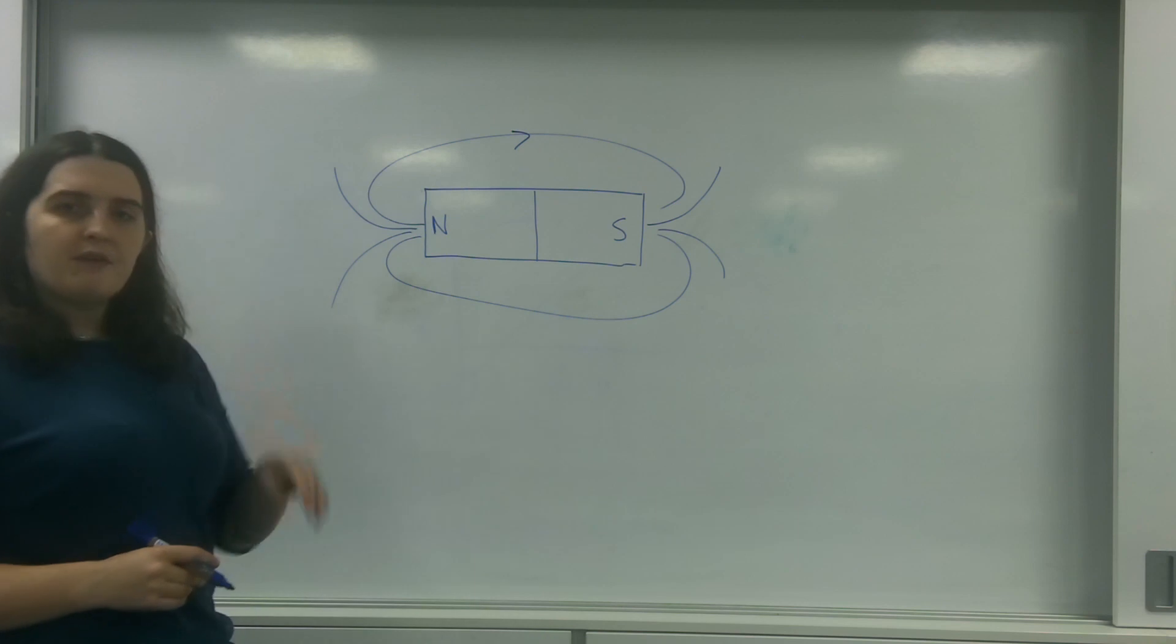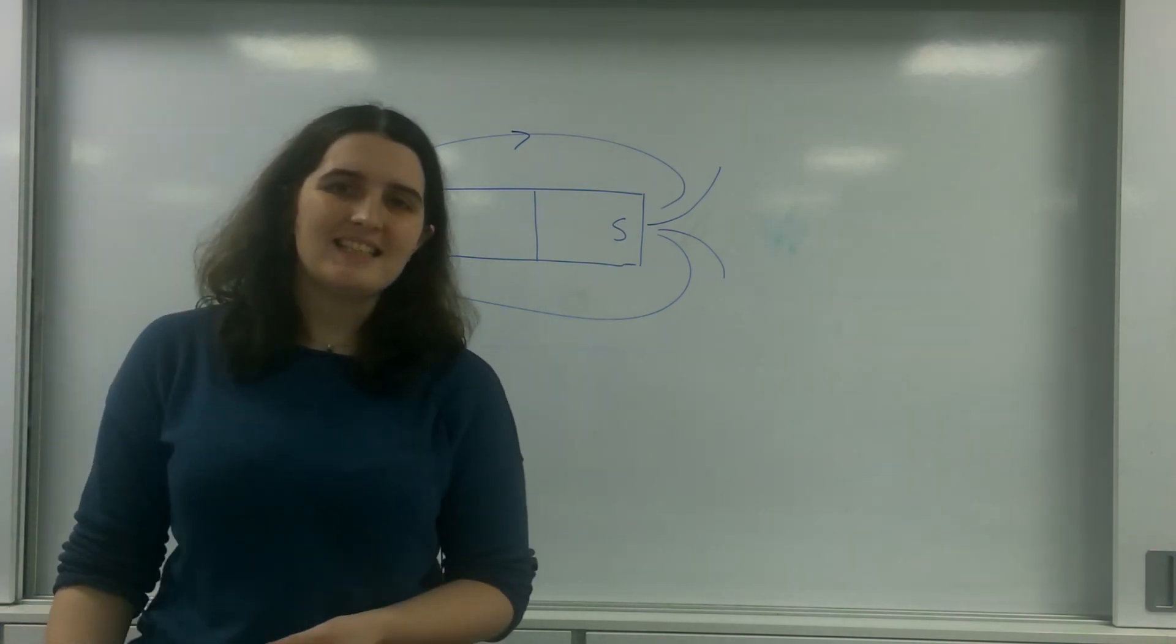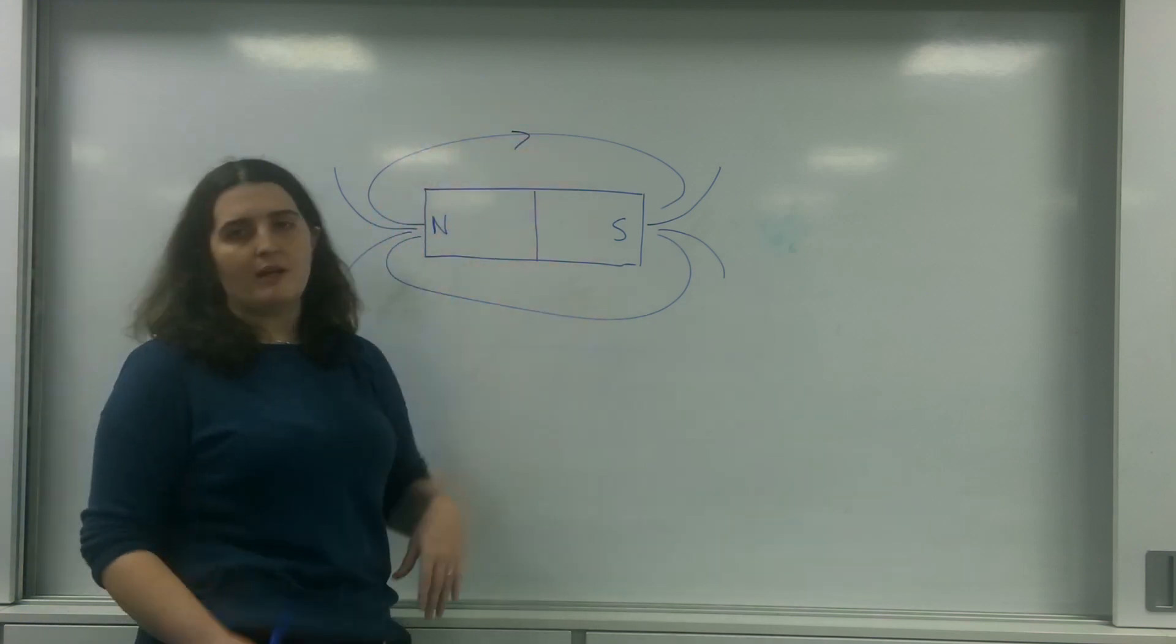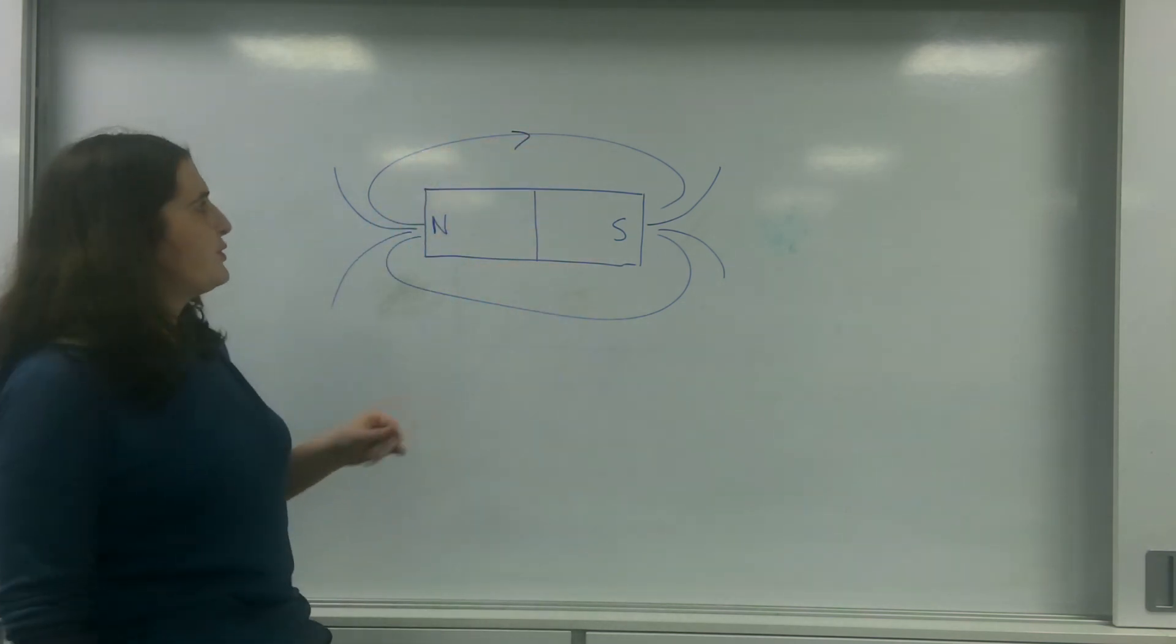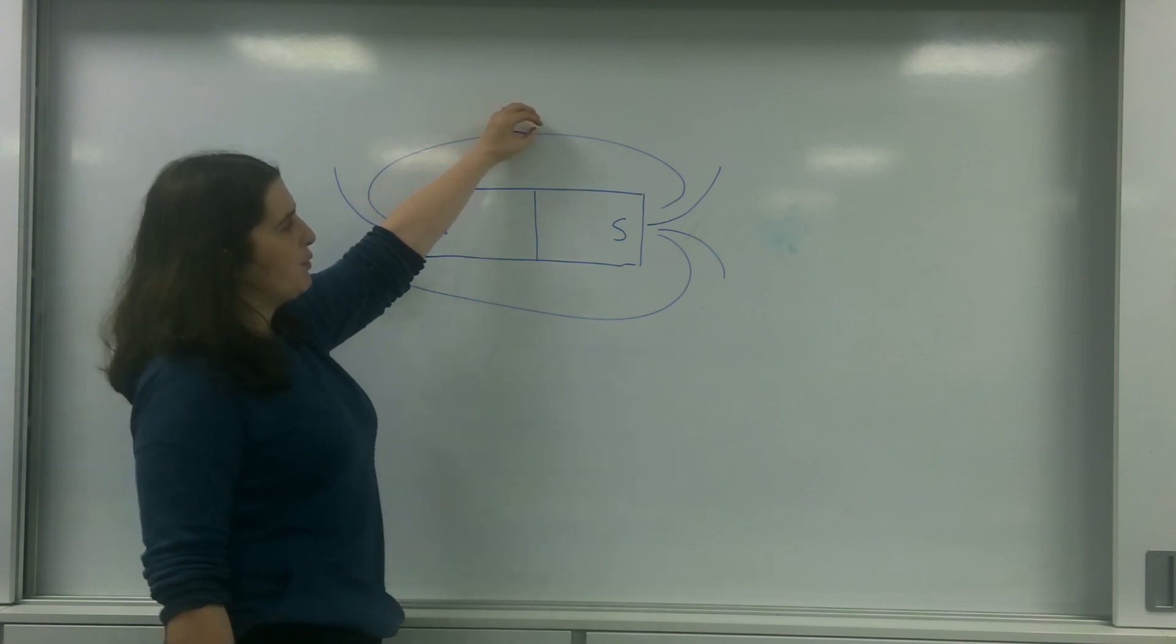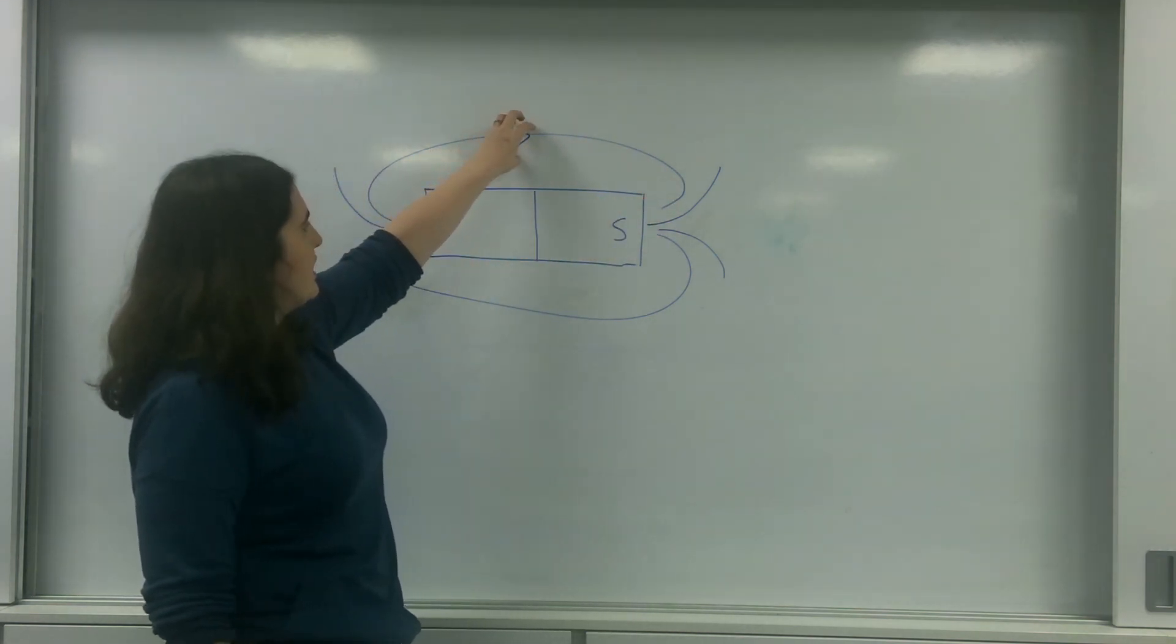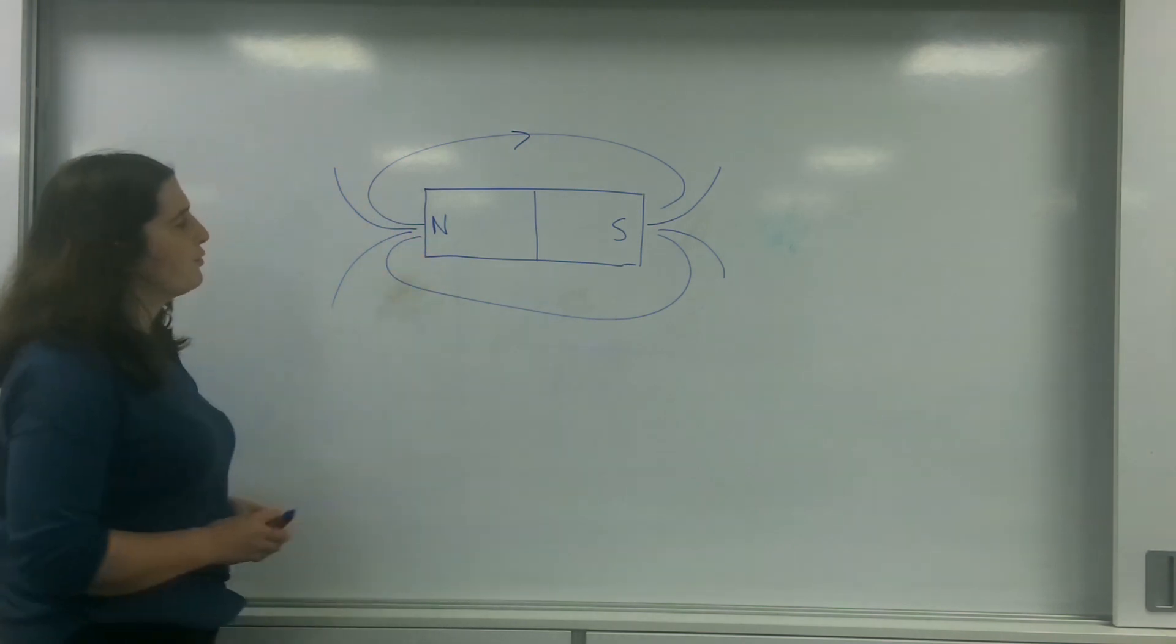This means that if I put a magnetic object in it, it will move towards the relevant field. So if I put the north side of the object here, this will move towards the south. If I put the south side in here, it would move towards the north.